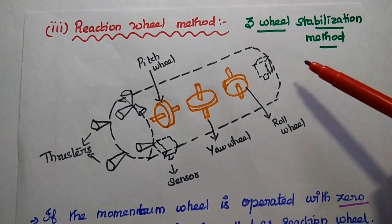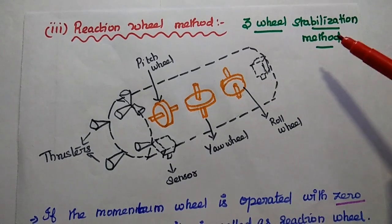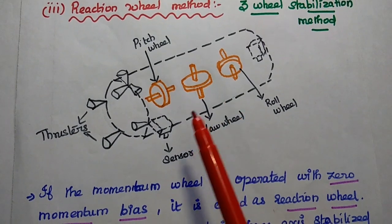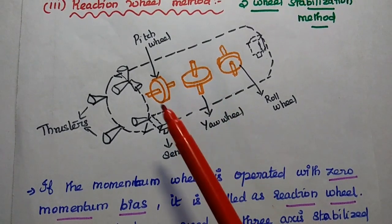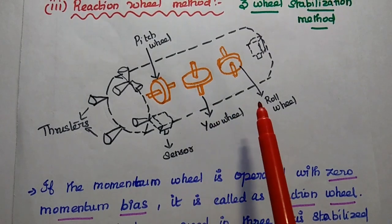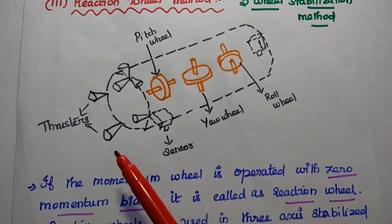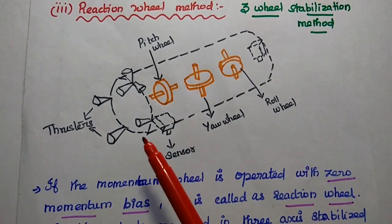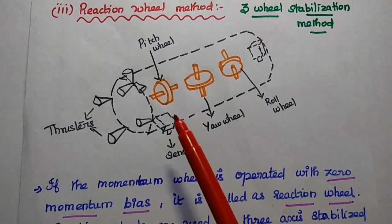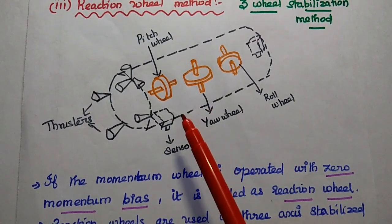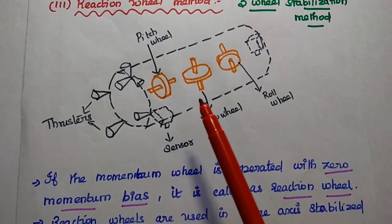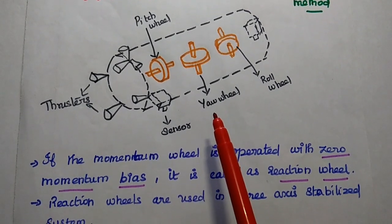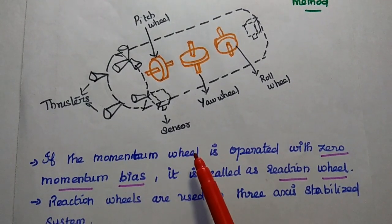The reaction wheel method — also called three-wheel stabilization — uses three wheels to provide stabilization for all three axes: a pitch momentum wheel, a yaw momentum wheel, and a roll momentum wheel, with thrusters for each axis. When the momentum wheels are operated with zero momentum bias, they are called reaction wheels. The reaction wheels for roll, pitch, and yaw provide stabilization in the proper orientation.